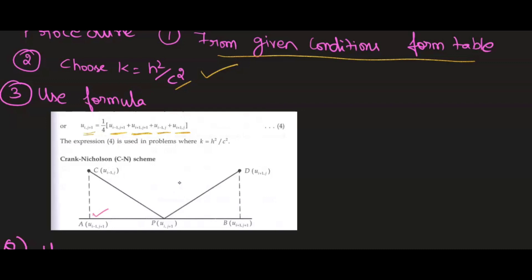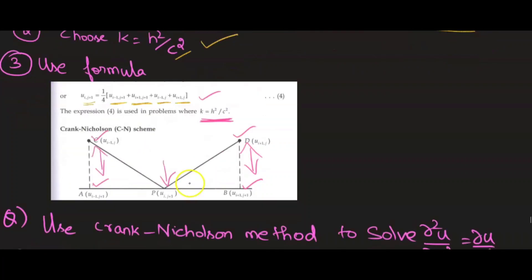Where are these 4 values? This place, this place, this place, and here. To find this value, you take the average of these 2 values plus these 2 values. You can memorize this formula, but by the tabular column you can see it easily and write it. Please keep in mind how to choose k: k = h² / c².